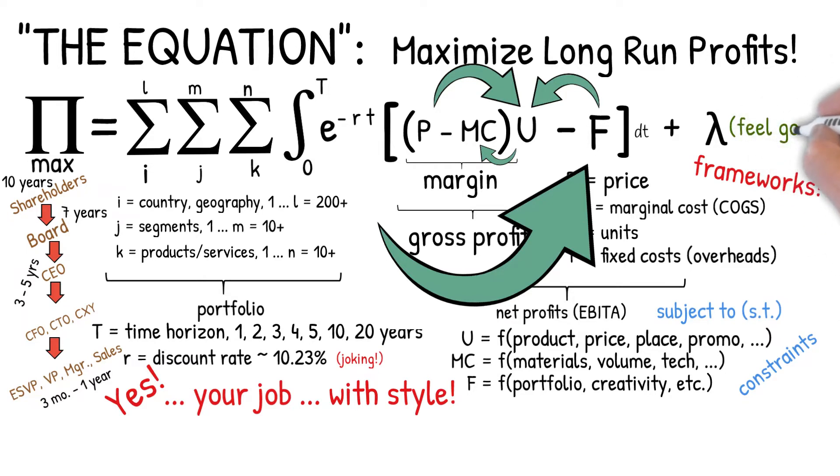Now, in my opinion, CEOs should have this equation tattooed on their foreheads backwards. So every morning when they wake up and look in the mirror, they know the objective of the day. You will probably never see this equation ever again. Nobody uses this formulaic structure when they're running a business.